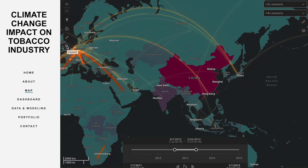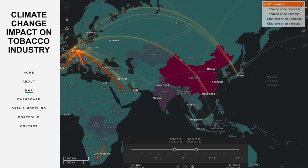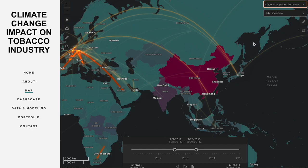Last but not least, the data query function, which is located at the top left. The user can see which countries may face a serious impact in the tobacco industry under different climate scenarios. By simply clicking the button, the map will do the calculation for you.